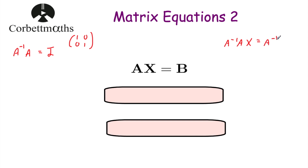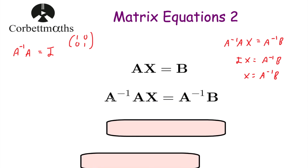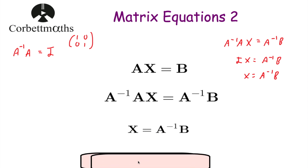Multiplying the inverse of A by A gives the identity matrix, so we have the identity matrix times X equals the inverse of A times B. And the identity matrix times X is just X. So X equals the inverse of A times B — that's how you solve this equation. To summarise: multiply both sides by the inverse of A, making sure it goes at the front. The order is very important. The left-hand side becomes just X, and the right-hand side is the inverse of A times B.